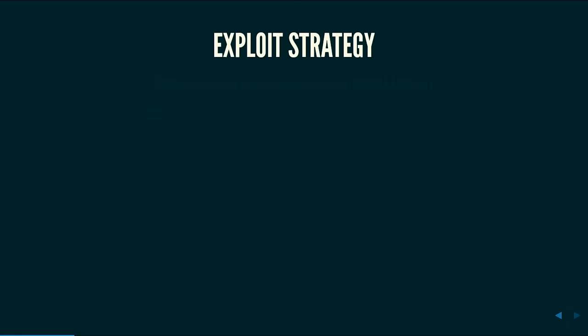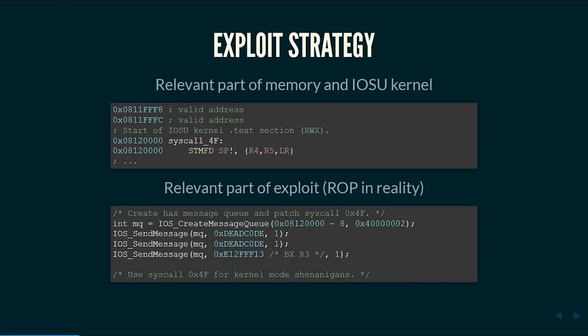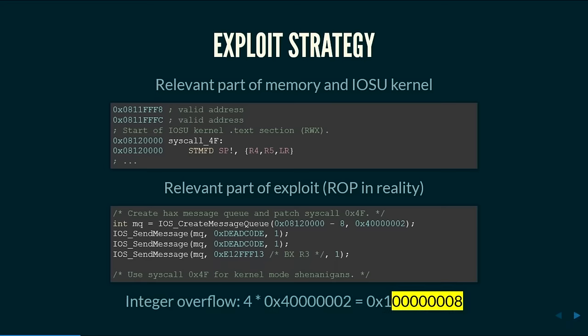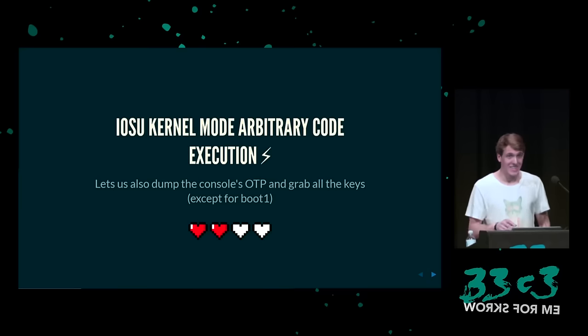Wenn man sich die Kernel-Section-Flags anschaut, sieht man Read-Execute im Kernel und bei den Datas Read-Write — aber das sind alles Lügen. Unsere Exploit-Strategie: wir schauen uns die relevanten Teile im IOSU-Kernel an. Es beginnt bei einer niedrigen Adresse, und es gibt einen Systemaufruf, dessen Adressen davor alle gültig sind. Also legen wir einen Message-Queue an, der bei minus 8 Bytes anfängt. Mit diesem Integer-Overflow — viermal dieser Wert um vier Bytes kürzen — denkt der Kernel, die Queue ist nur 8 Bytes groß, aber wir können jede Message dort reinlegen. Das gibt uns IOSU-Kernel-Mode-Execution — zweites Herz — und damit haben wir komplette Kontrolle über die Konsole.